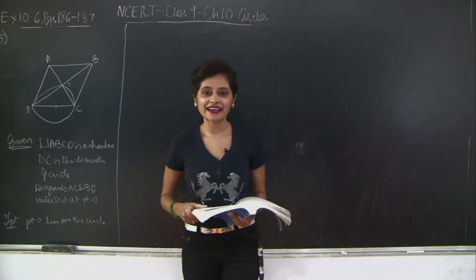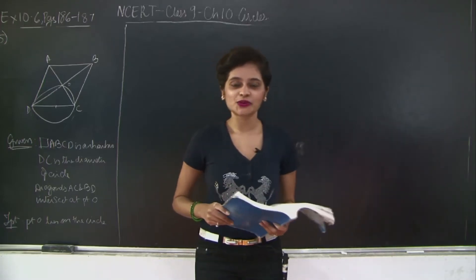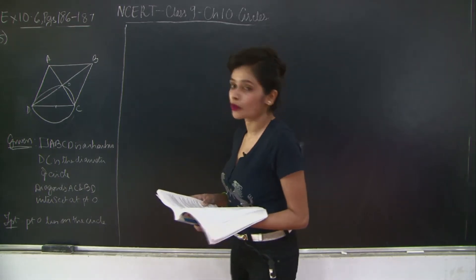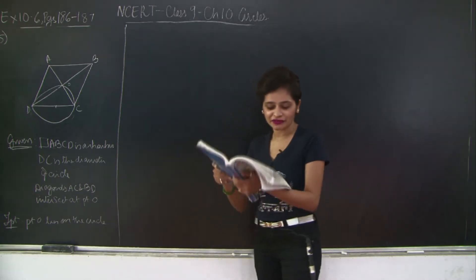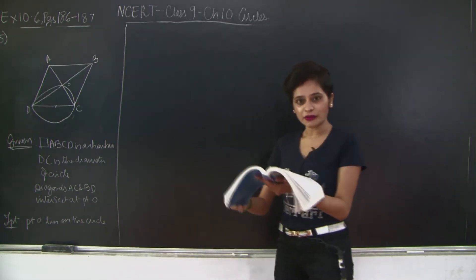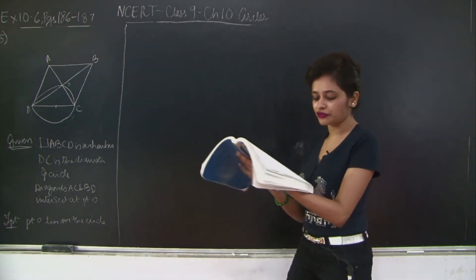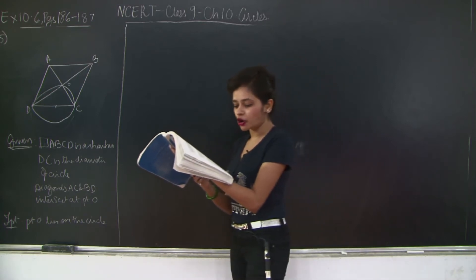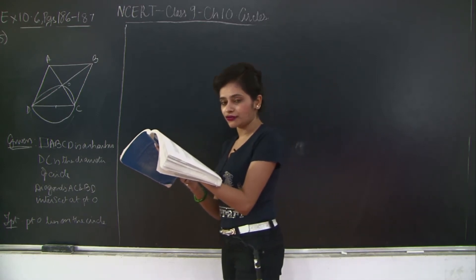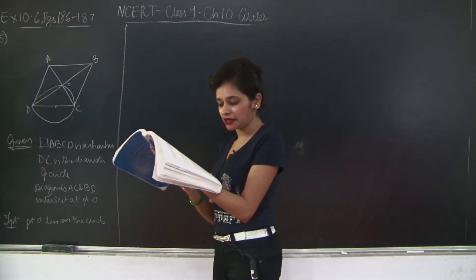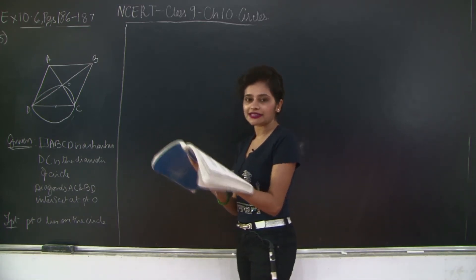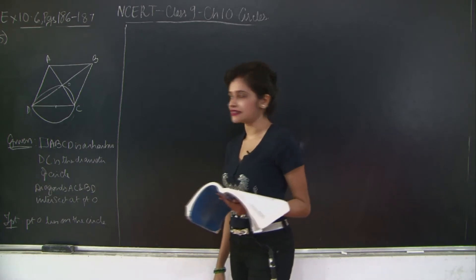Hello students, welcome back. Let us continue with chapter 10 circles, exercise 10.6, question number 5. I'm reading out the question for you: Prove that the circle drawn with any side of a rhombus as the diameter passes through the point of intersection of its diagonals.